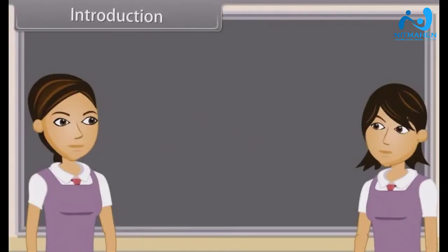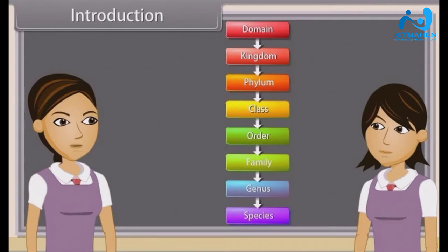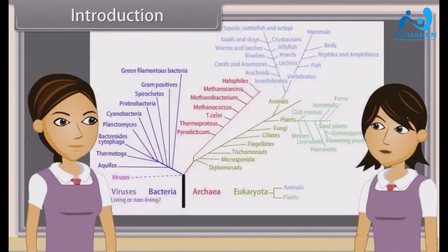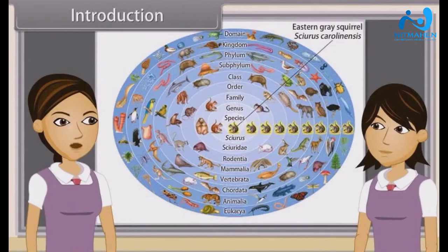Do you know what is biological classification? Biological classification, or scientific classification in biology, is a method by which biologists group and categorize organisms by biological type, such as genus or species. Modern biological classification has its root in the work of Carolus Linnaeus, who grouped species according to shared physical characteristics. These groupings have since been revised to improve consistency with the Darwinian principle of common descent.